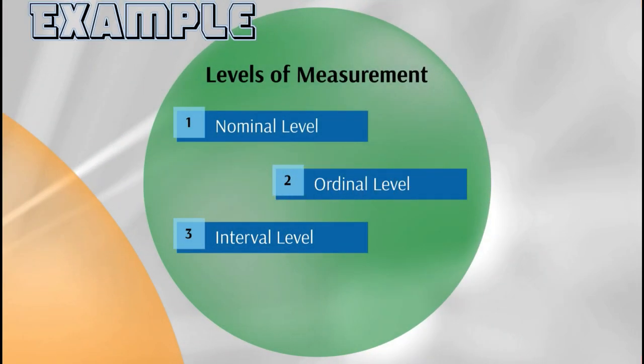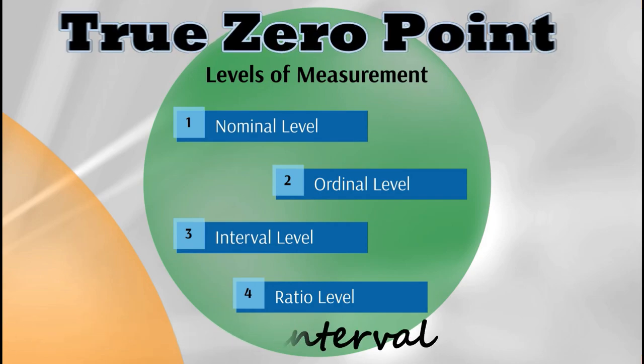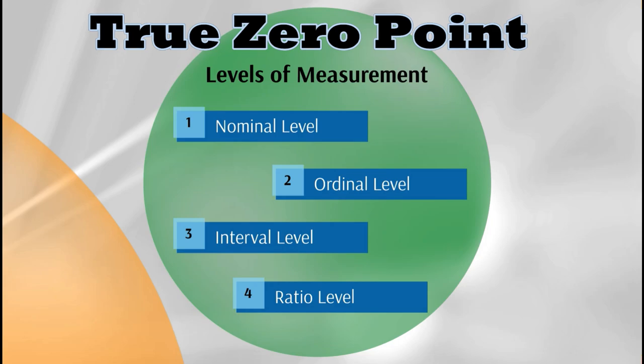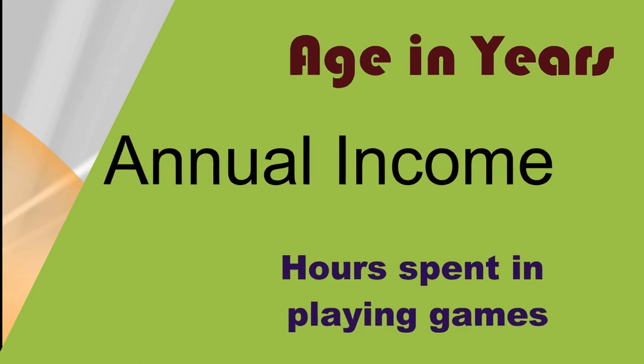Last we have the ratio level. The ratio level of measurement contains all the properties of the interval level and in addition it has a true zero point. For example, age in years, annual income of a company, or the number of hours spent playing mobile games.